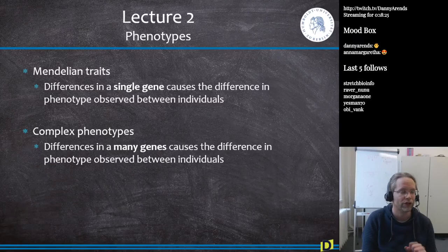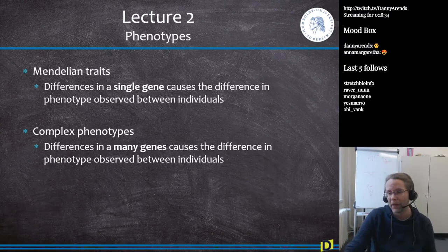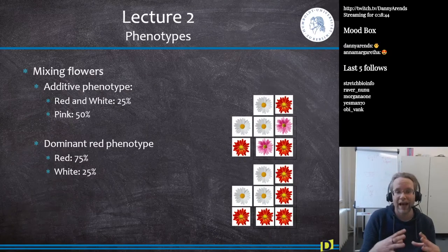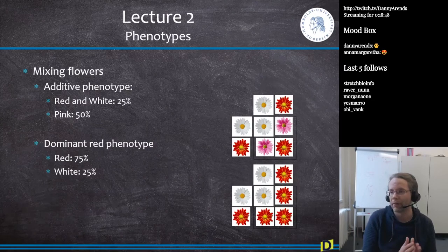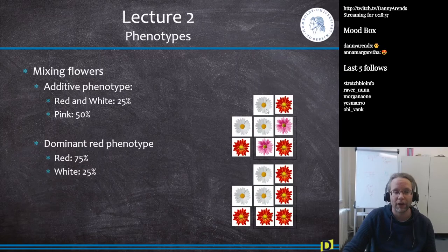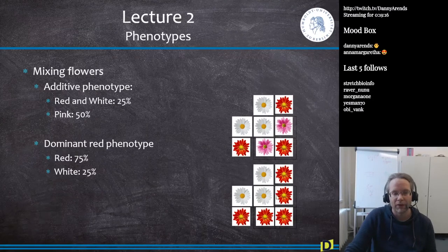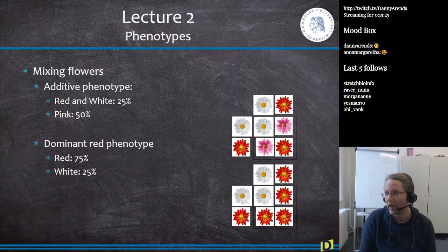Complex phenotypes like human height and intelligence are determined by many different genes. We also talked about the mixing flowers concept: if a phenotype is additive, crossing a red and white flower gives a mixed result following Mendelian inheritance. If there is dominance, one phenotype dominates and you get a different proportion. Be able to read these diagrams — I might show you one and ask whether it shows an additive or dominant phenotype.